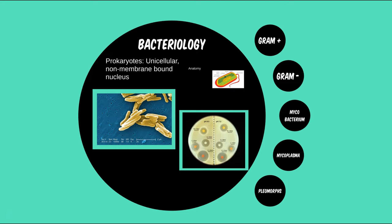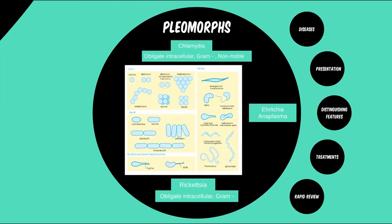For the polymorphs, we have two main genera to talk about: Chlamydia and Rickettsia, though Coxiella and Mycoplasma can also fit into this category — they were covered in another module. Ehrlichia and Anaplasma are also much less frequent but still worth knowing. Polymorph simply means the bug changes shape with its environment, so unlike cocci and bacilli that generally hold their shape, these bugs can look different under the microscope depending on other factors.